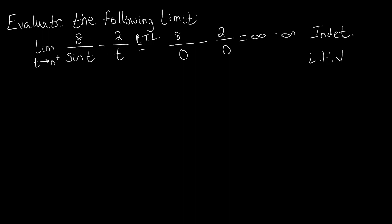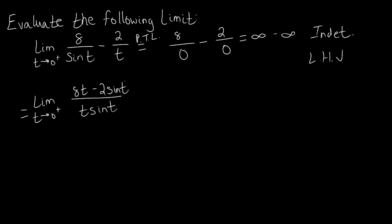So we're going to translate this into an equivalent form as one fraction. We'll find a common denominator, make this one fraction, and then take the derivative of the numerator and denominator individually. The common denominator between the two denominators is t times sine of t. The first fraction was missing a t, so we multiply 8 by t, and the second fraction was missing a sine of t, so we multiply 2 by sine of t. This gives us our combined fraction.